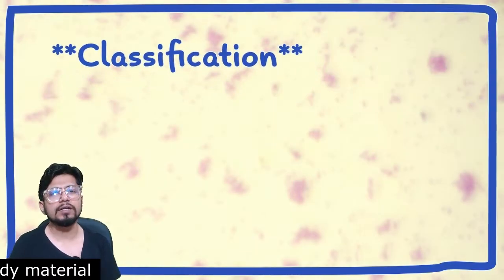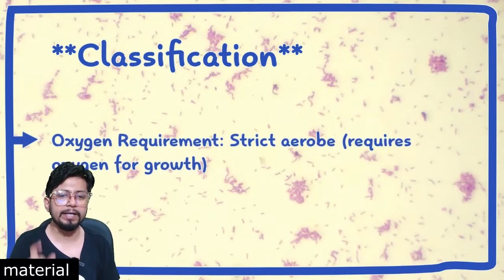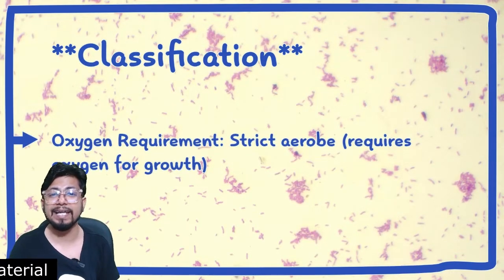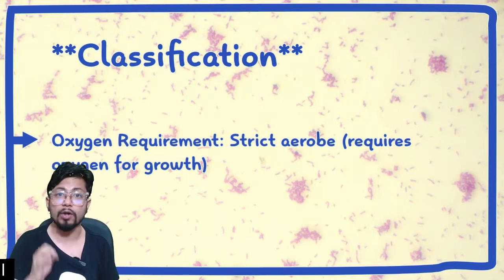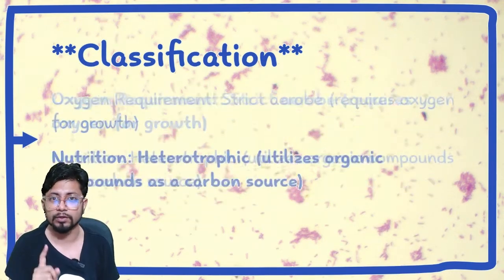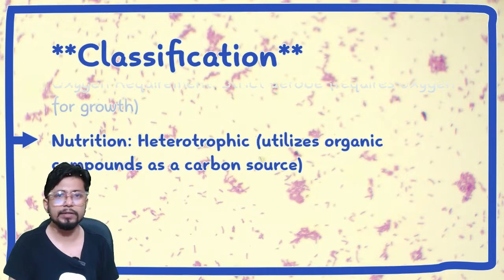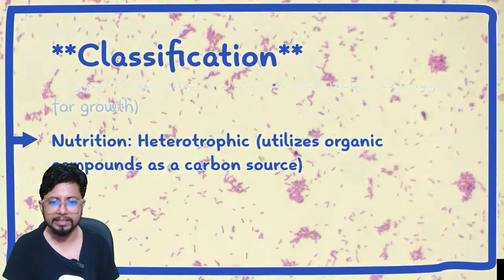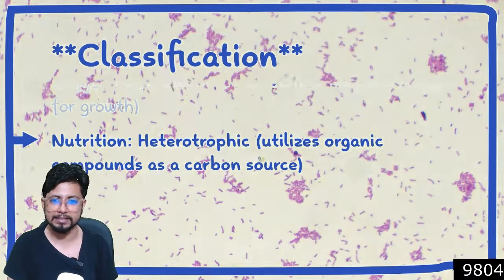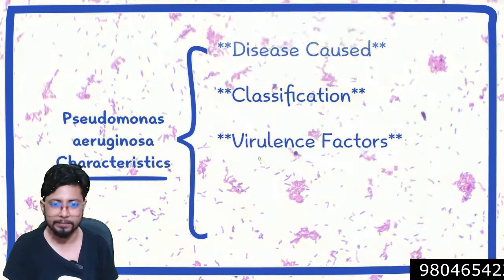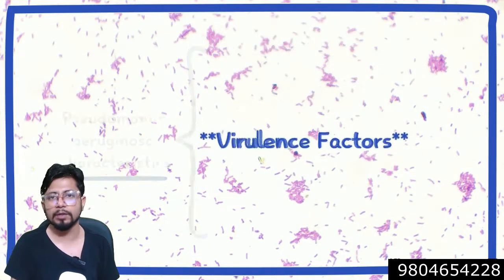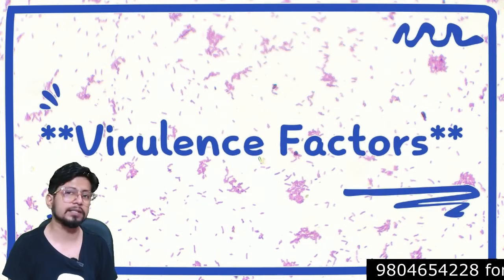For oxygen requirement, Pseudomonas aeruginosa is strictly aerobic in nature, meaning it requires oxygen for growth. For nutrient requirement, it is heterotrophic in nature — it utilizes organic compounds as a carbon source for energy.